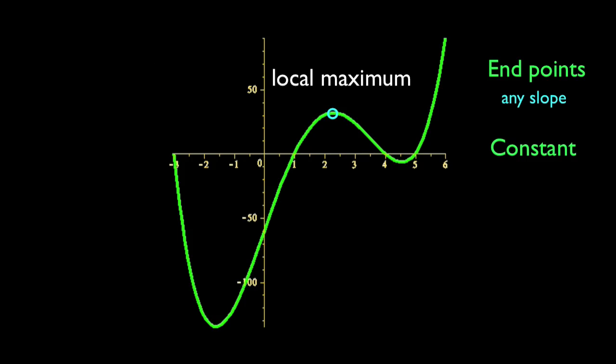A local maxima need not have the largest value on the graph, but it must have the largest value in its local neighborhood. That's why we call it a local maxima. Similarly, a local minimum must have the smallest value in its local neighborhood.